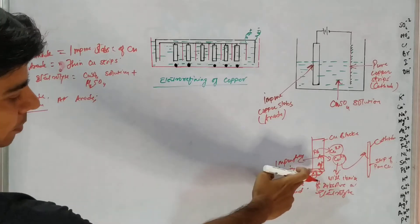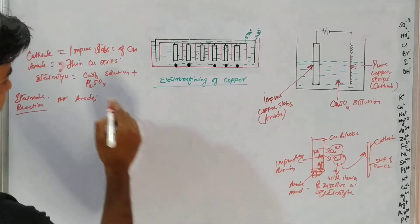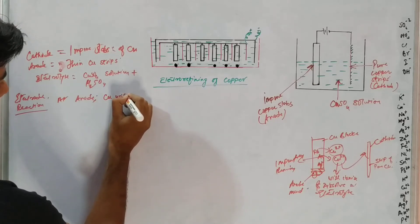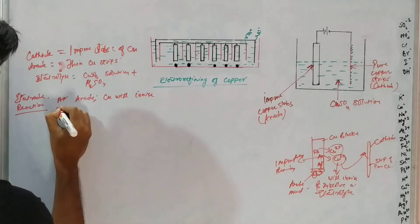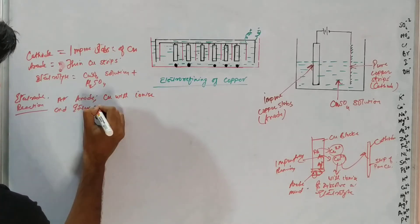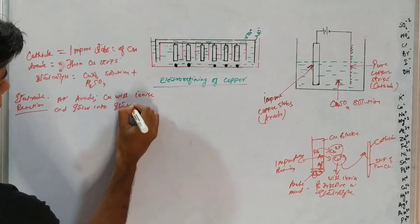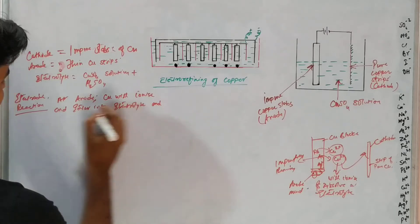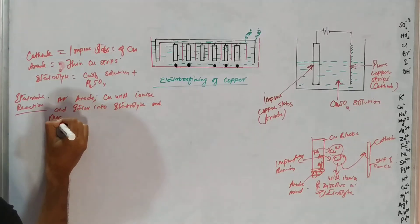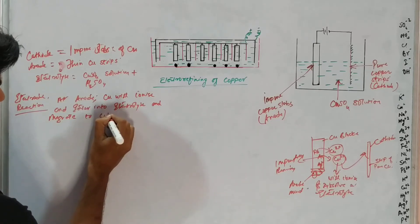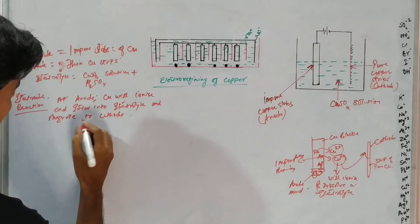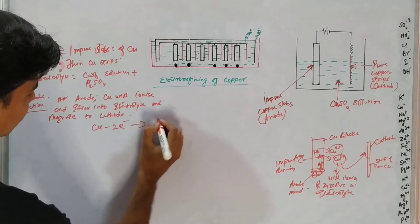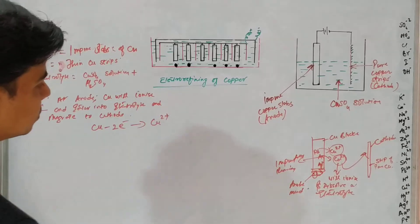All the metallic impurities will remain near the anode — this is known as anode mud. At the anode, copper will ionize: Cu → Cu²⁺ + 2e⁻. Copper dissolves in the form of copper ions and enters the electrolyte, migrating to the cathode.